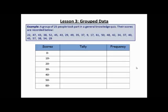In this lesson, we're going to look at grouped data in a frequency table and then how to make a histogram using that frequency table. Sometimes when you have a variable that has a large range of values, like in this example where 25 people took part in a general knowledge quiz and their scores are recorded below, it wouldn't really make sense to take a tally of each individual score. So what we do is we group the data into what we call class intervals.